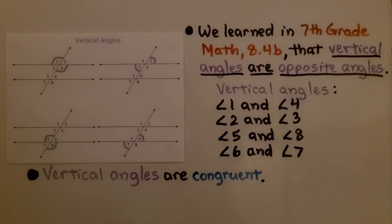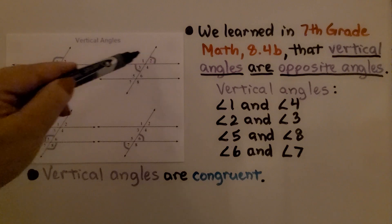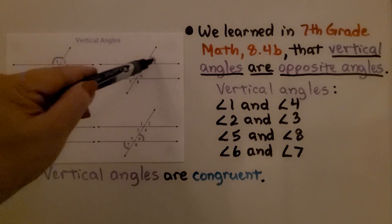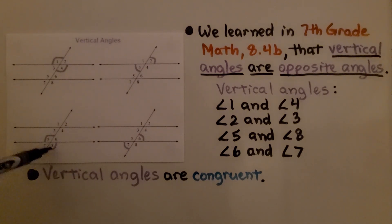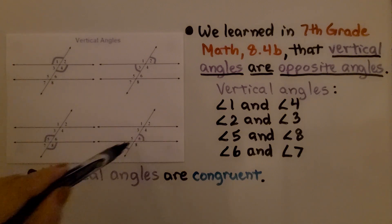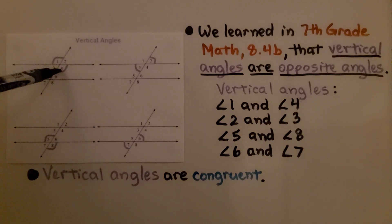We learned in seventh grade math 8.4b that vertical angles are opposite angles. So angle one is opposite of angle four — they're vertical angles. And angle two is opposite of angle three — they're vertical angles. So are five and eight, and six and seven. Vertical angles are congruent, so whatever the measure of angle one is, is the same measure for angle four, and so on.